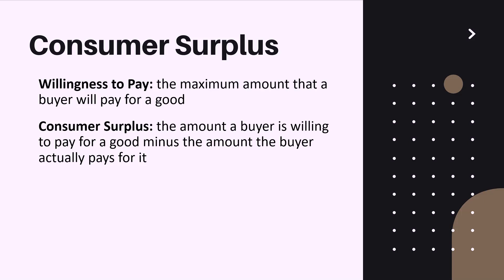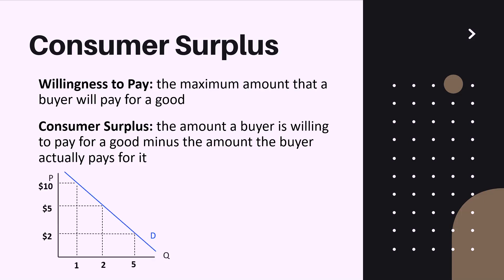Let us graph our demand curve to better understand the concept. Let's say we have an equilibrium price of five dollars. The area below the demand curve and above the equilibrium price represents the consumer surplus.